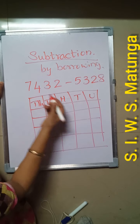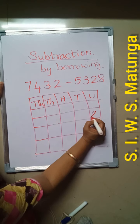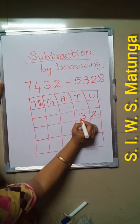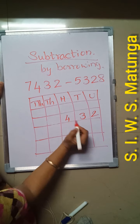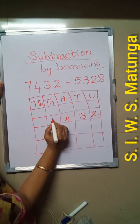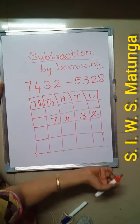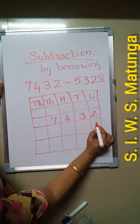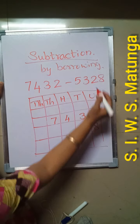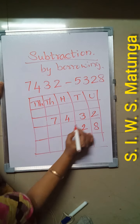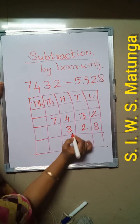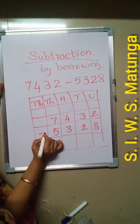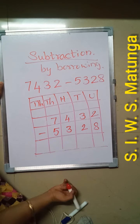Take the first number and write it: units place 2, tens place 3, hundreds place 4, and in thousands place 7. Second number: units place 8, tens place 2, hundreds place 3, and in thousands place 5. Put the subtraction sign here.